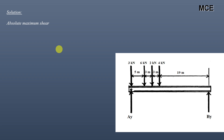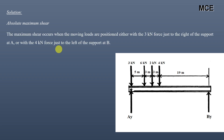The absolute maximum shear in a simply supported beam will occur just next to one of the supports. In this case we have to place the series of loads such that one of the loads is at the support. The absolute maximum shear will either occur at support A or at support B. When it occurs at support A, we place the 3 kN load just to the right of support A, and if it occurs at support B, we place the 4 kN load just to the left of support B, ensuring all loads remain on the beam.